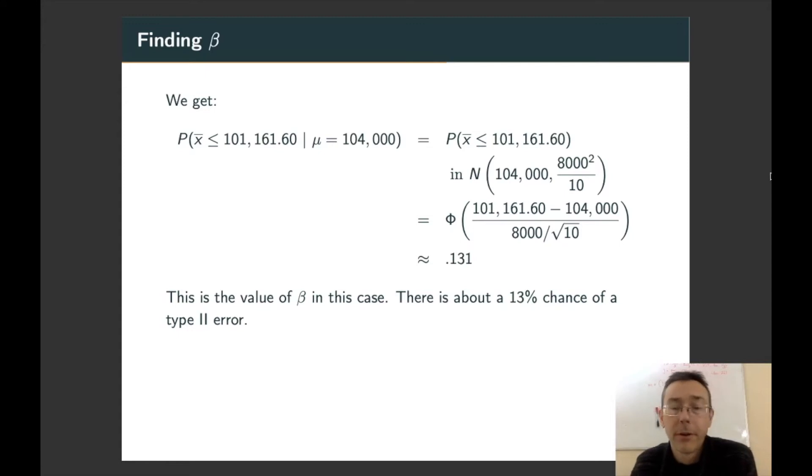So we put that into the normal CDF, like P-norm, for example, in R, and we get about 13.1%. So this is the probability of a type 2 error in this case. Simple, right? Well, not quite.